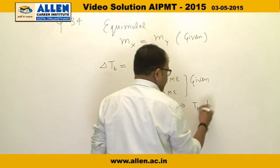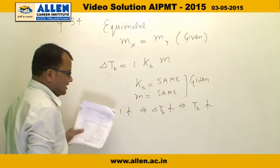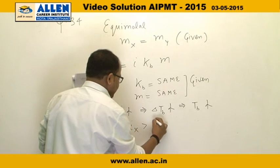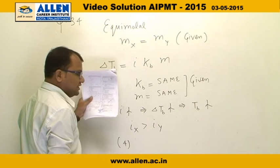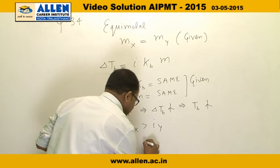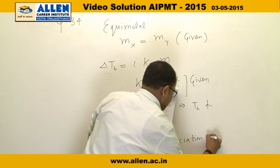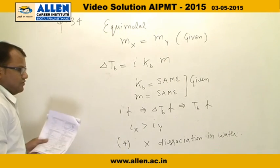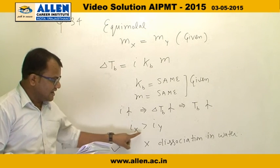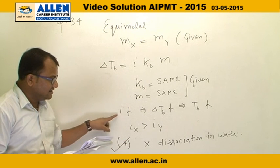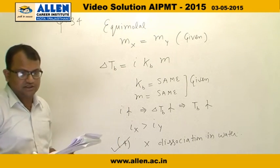Since the boiling point of x is greater than y, the van't Hoff factor i of x is greater than i of y. Hence, option 4 is correct: x undergoes dissociation in water, which increases i and makes the boiling point elevation greater.